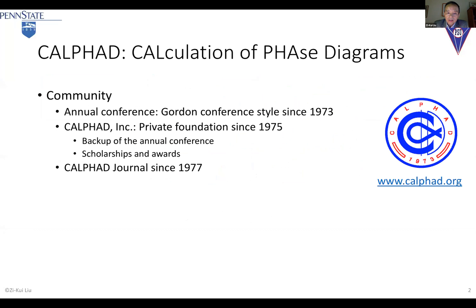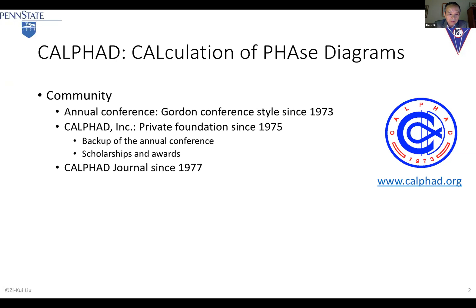There's a private foundation since 1975. The goal of the foundation is to back up the annual conference because of finance risk issues. And later on, we started scholarships and awards. This journal started in 1977. And as you know, there are many tools and databases — they are the backbone of ICME and MGI.